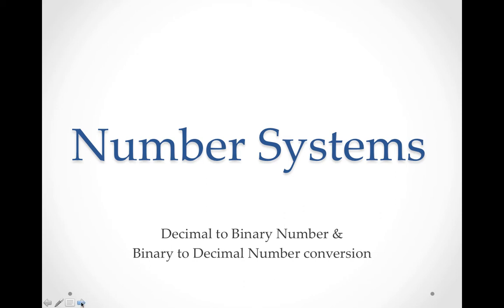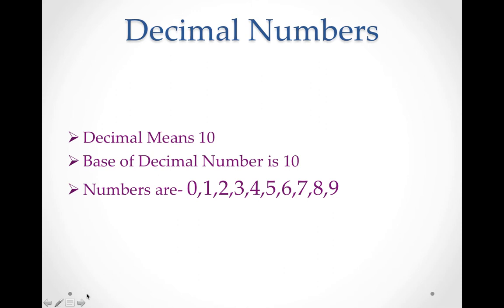If we type any decimal number in a computer, we can only type decimal numbers from our keyboard — anything from 0 to 9. So how does the computer understand what we are typing? Because the computer converts that number into binary.